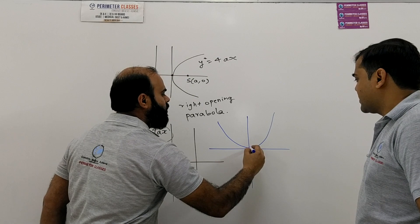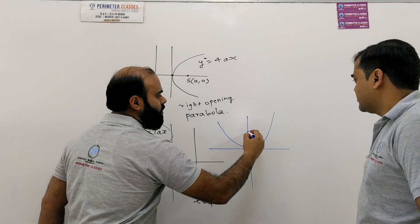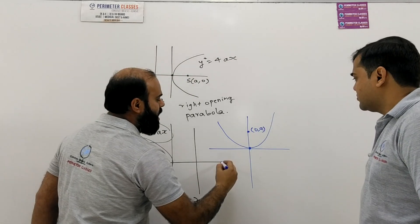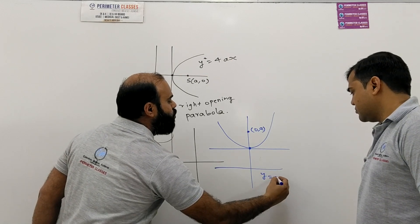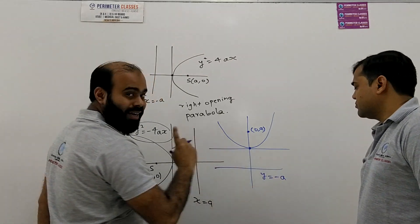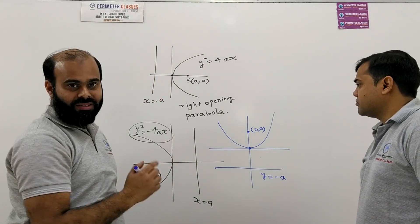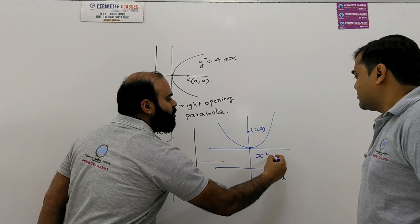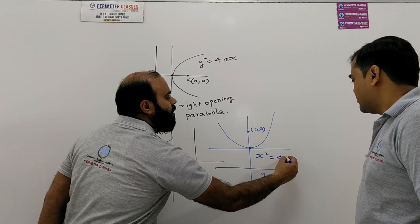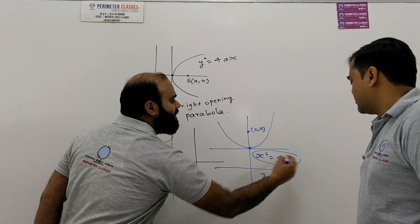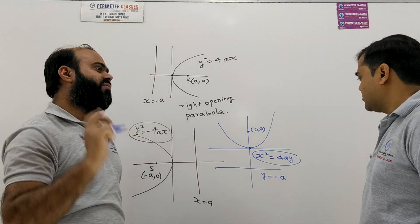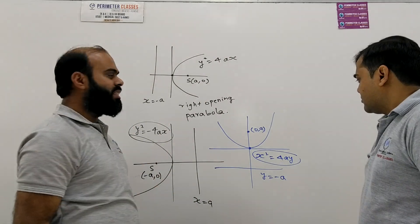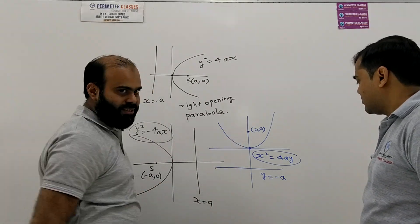Third, we have the upward-opening parabola, with focus at (0, a) and directrix y = −a. Its equation is x² = 4ay. Here x is squared and y has power 1, because the graph is symmetric about the y-axis, with the focus on the y-axis.